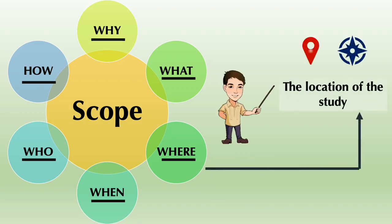The third W is where. In our research project, we need to highlight in the scope section the research locale or the location of the study. It is necessary to articulate where is your study site.